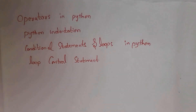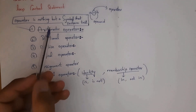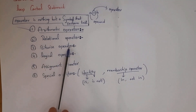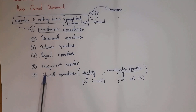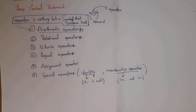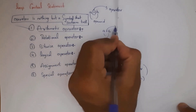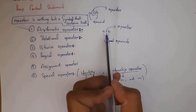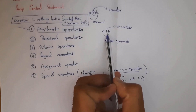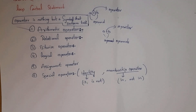Python supports six types of operators: arithmetic operator, relational operator, bitwise operator, logical operator, assignment operator, and special operator, where special operator contains identity and membership operators. An operator is a symbol that performs certain tasks. For example, a + b, where a and b are operands and + is the operator performing addition. Similarly, a - b uses minus as the symbol for subtraction.